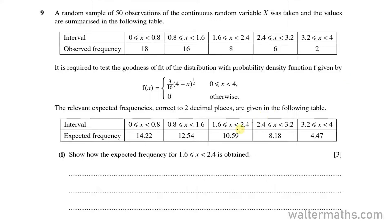Here they are asking for the expected frequency, which is 10.59, and how it was obtained. Expected frequencies are calculated from the distribution. In this case, we have a continuous distribution f, from which the probabilities are being calculated and the expected frequencies are being derived. Using this function, I'm going to calculate the probability that X would lie between 1.6 and 2.4.